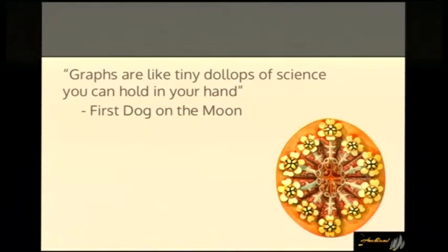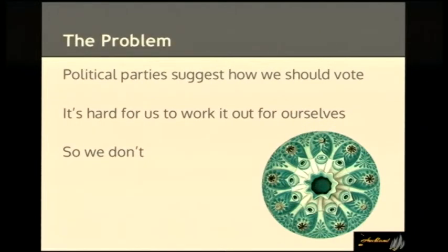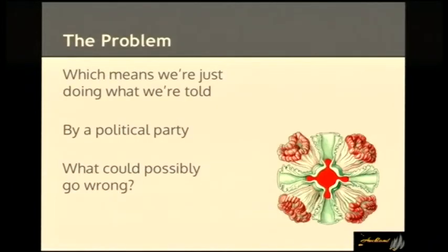So here's where we start — a tiny little dollop of science from the First Dog on the Moon comic strip. Here's the problem: political parties are suggesting how we should vote. They're giving us how-to-vote cards and so on, and often it's hard for us to work it out for ourselves. So we don't — which means in the end we're just doing what we're told by people seeking political power. So the question is: what could possibly go wrong?